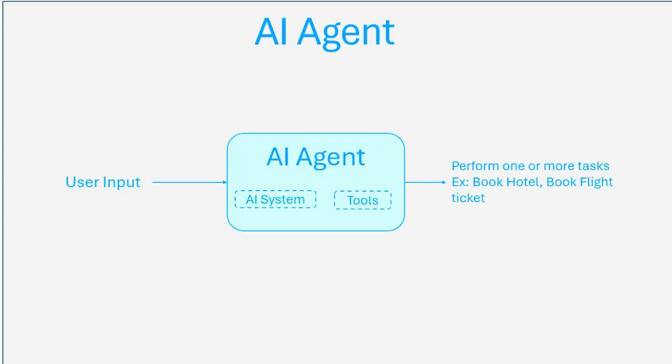An AI agent can perform tasks on your behalf. For example, if you want to book a hotel, the agent can check availability, compare options, and book it for you.